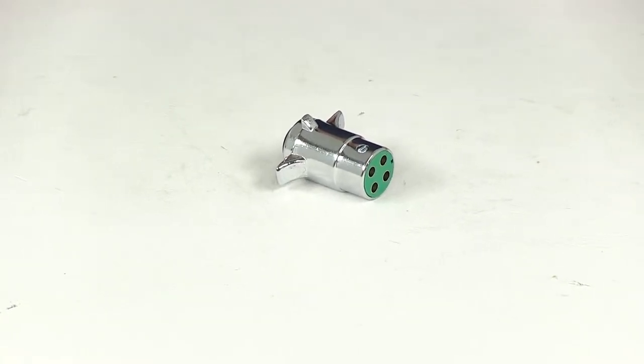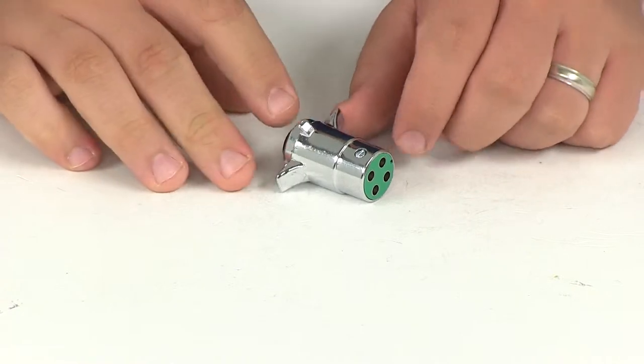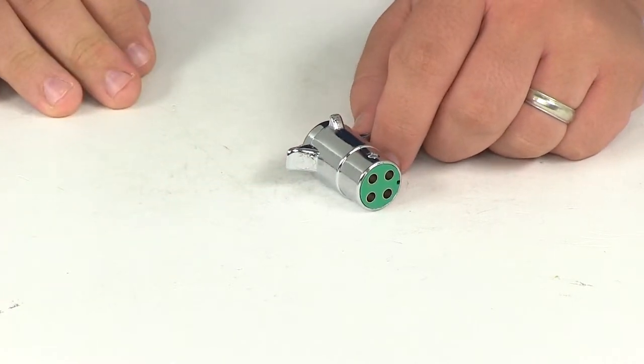Today we'll be reviewing part number PK11409. This is the Pollock heavy-duty four-pole round pin trailer wiring connector.